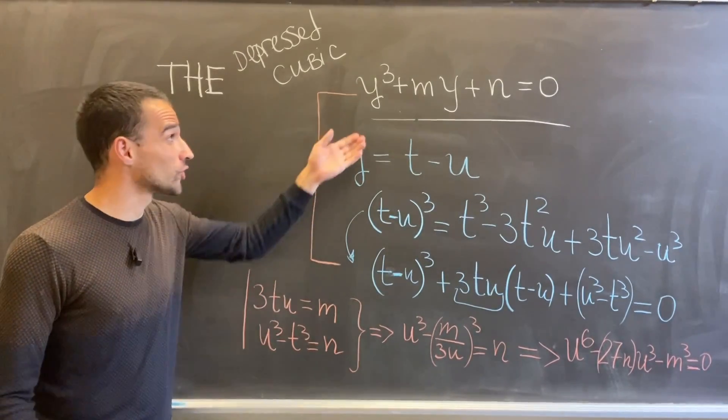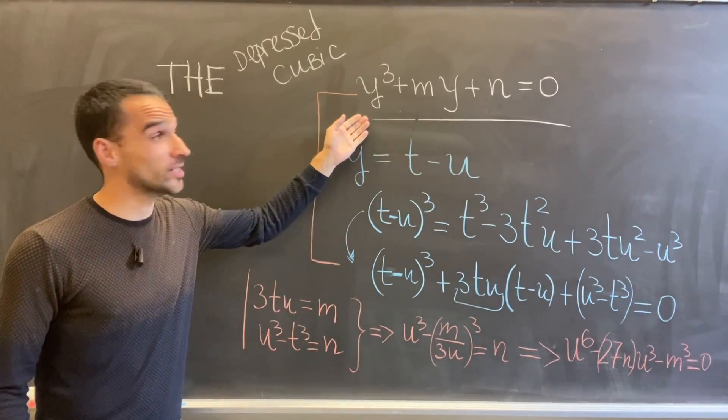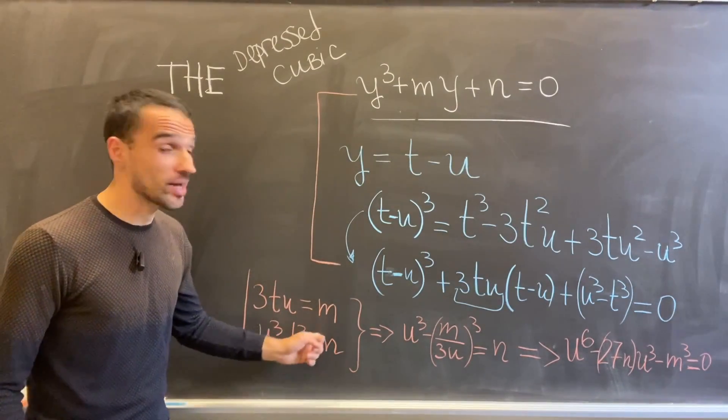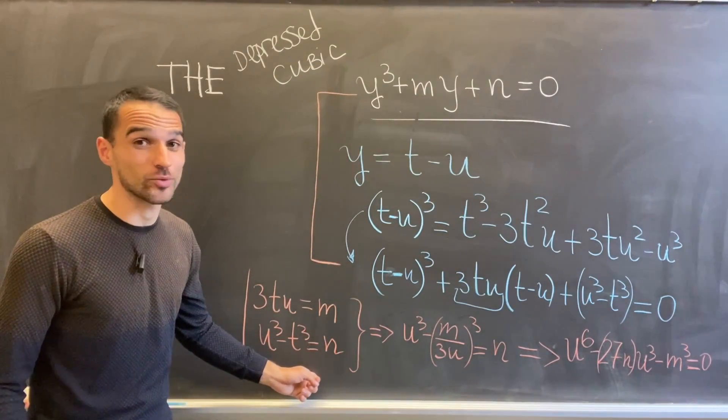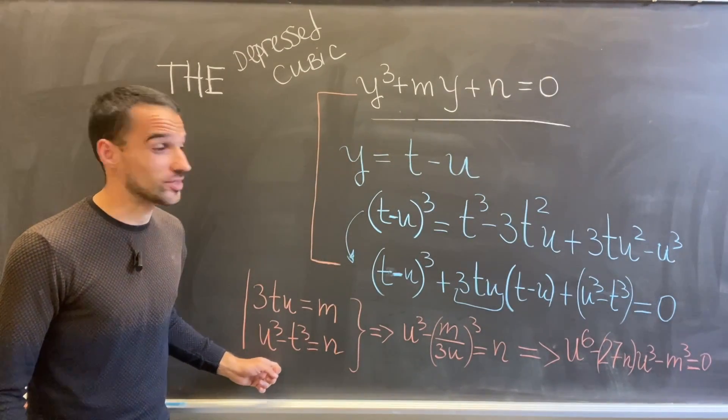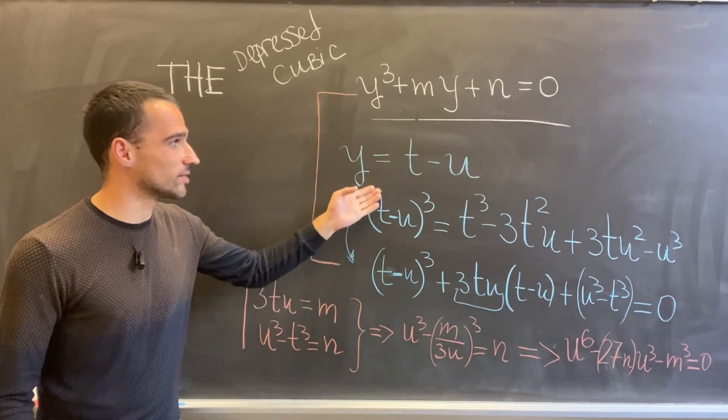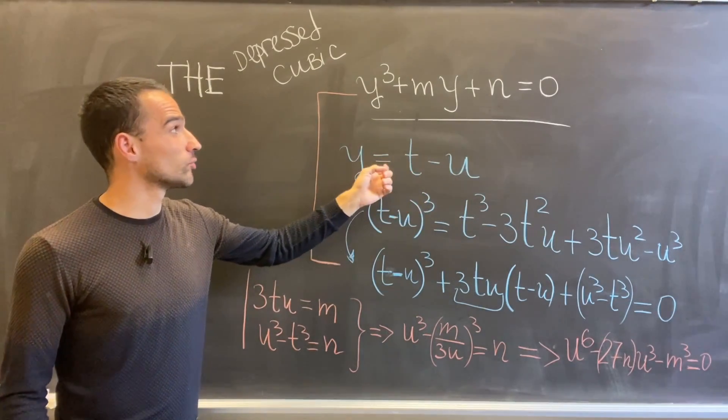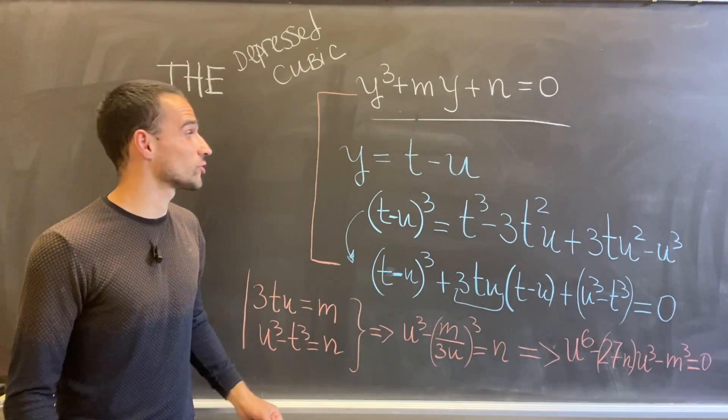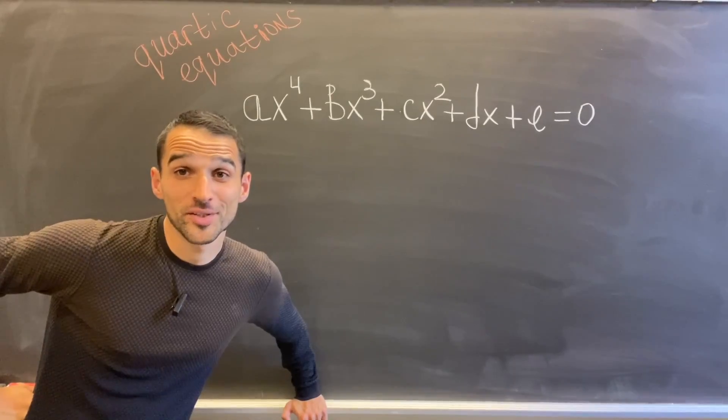So that was everything we need to know in order to solve cubic equations. First, get the depressed cubic, then solve this system—remember that m and n are two given numbers that we know. So after we solve the system, we know t and u, and that's it. Then our y is t - u. Then we get back to the original form of our cubic equation to get x.